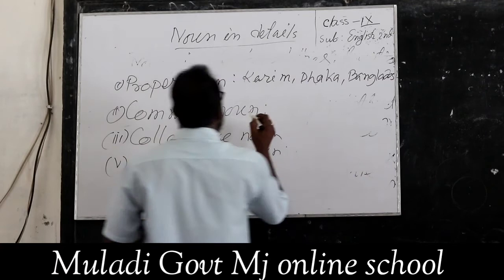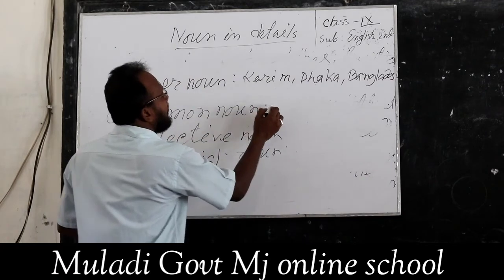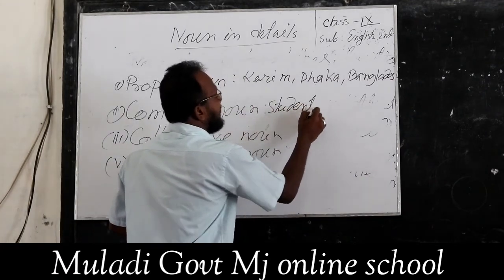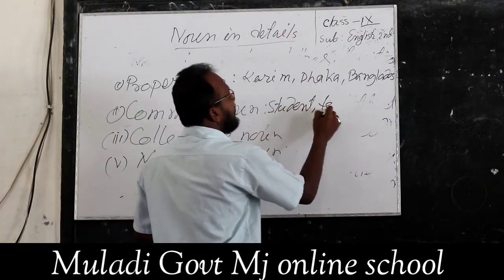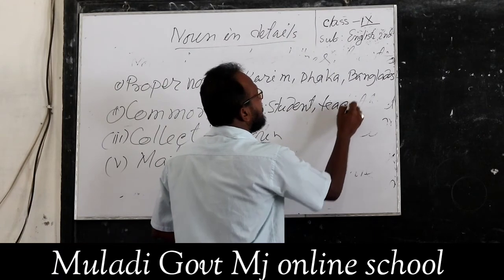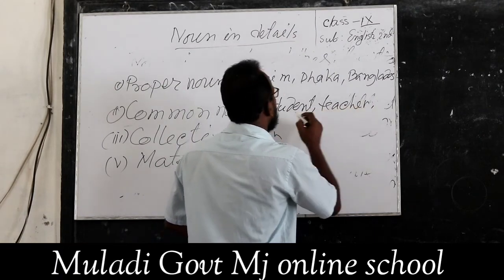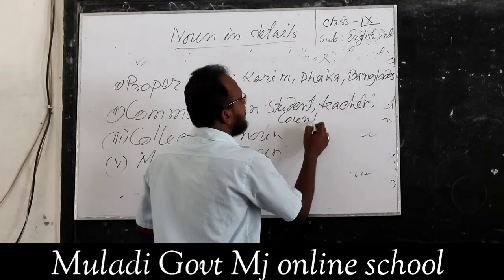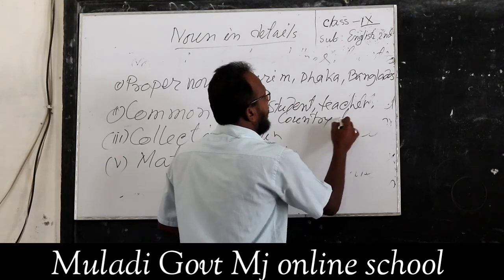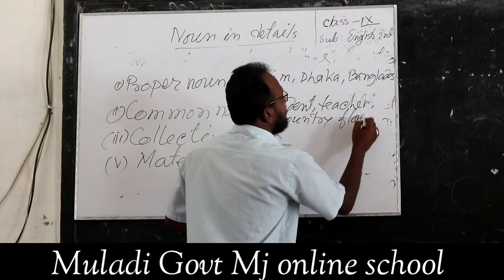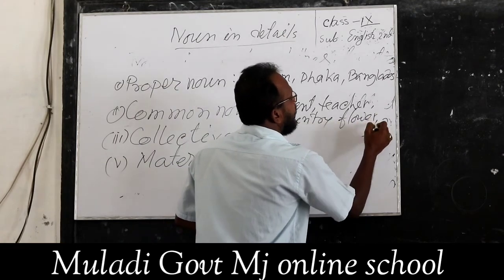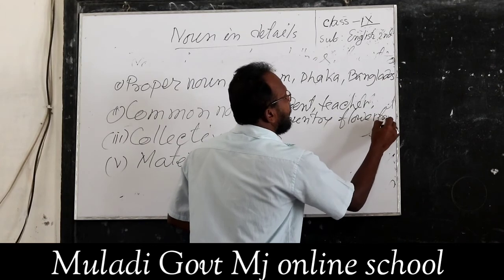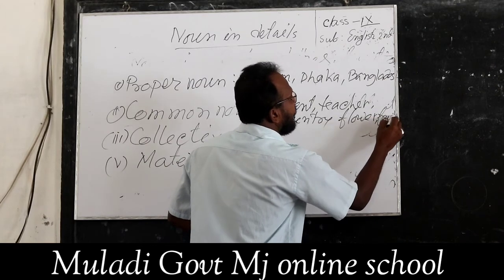Common noun is the general name of a person, thing, or idea of the same type, such as student, teacher, country, flower, fruits, etc.